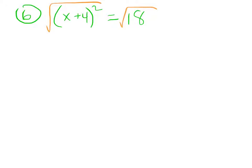And on the left, my square and my square root cancel, and I just get x plus 4, and then when I take the square root of 18, that's actually going to be plus or minus 18.